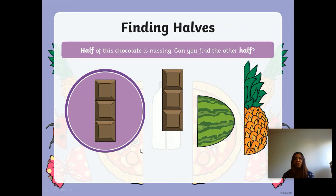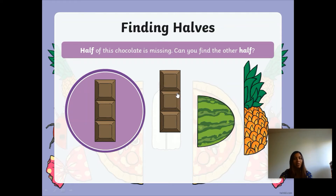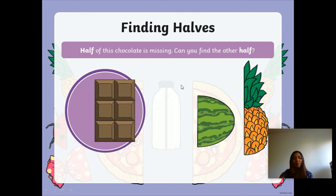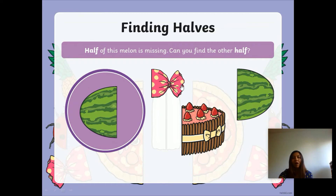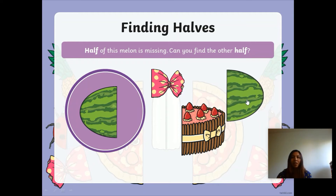Chocolate! Half of this chocolate is missing. Can you find the other half? Point to it — the other half of the chocolate, which is exactly the same as this one, is this piece. Now the melon — something a bit healthier! Remember, it's been cut in the middle to make sure it's two equal parts. Can you say that? Two equal parts — excellent! And the other half of the melon is also green and the same size, so it must be this one.